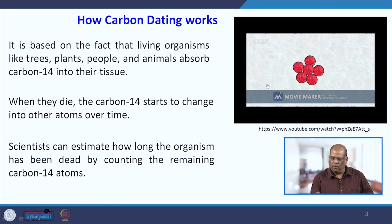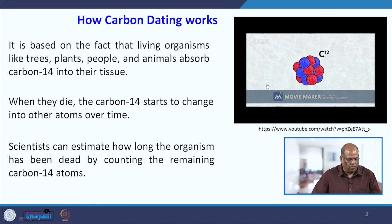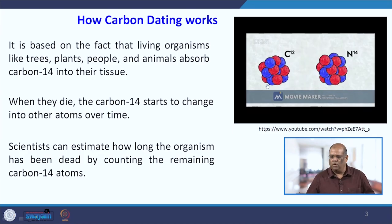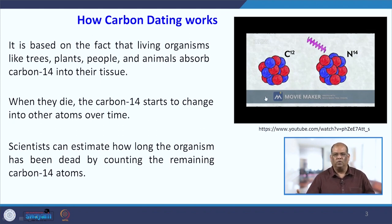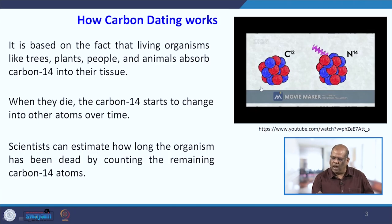A typical carbon atom consists of 6 protons and 6 neutrons — we call that carbon-12. High above the atmosphere, cosmic rays hit nitrogen atoms and create a carbon atom which consists of 6 protons but 8 neutrons. We call this carbon-14.